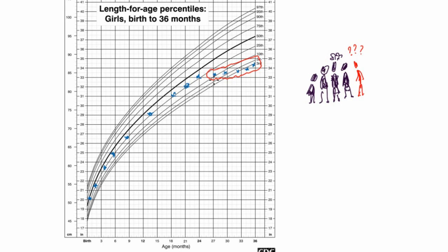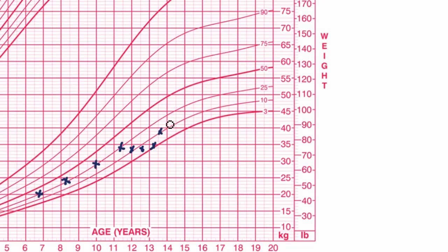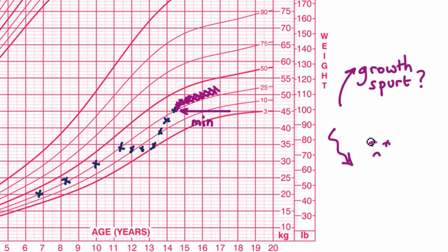You should in any case treat any prediction you make from a growth chart as a minimum. Why? First of all, because you may want your child to have a buffer in case of a growth spurt or gastric flu or something like that.